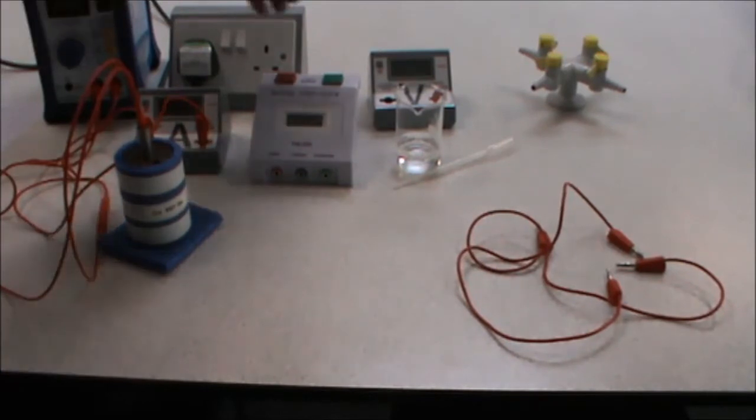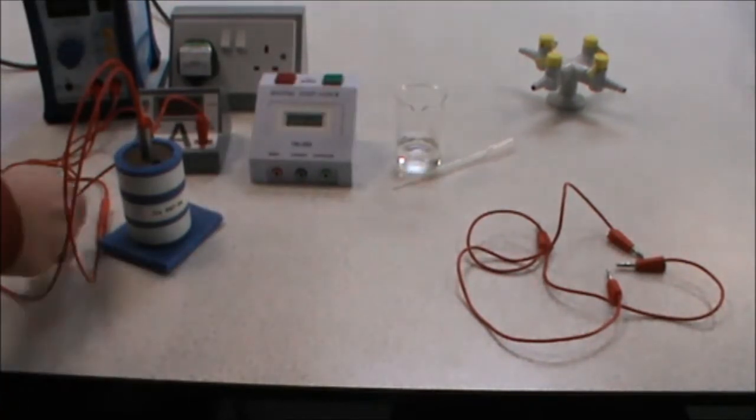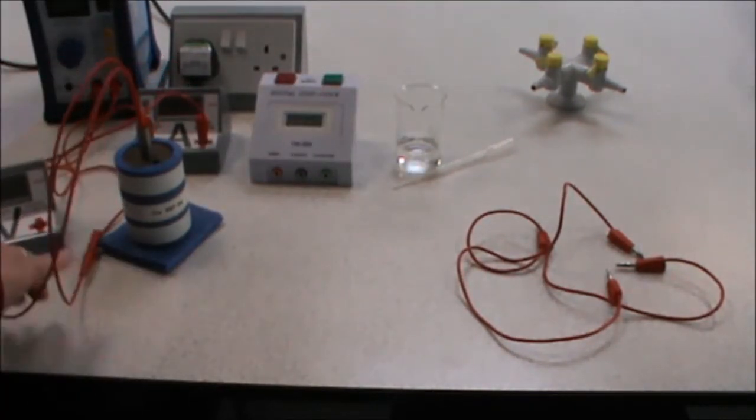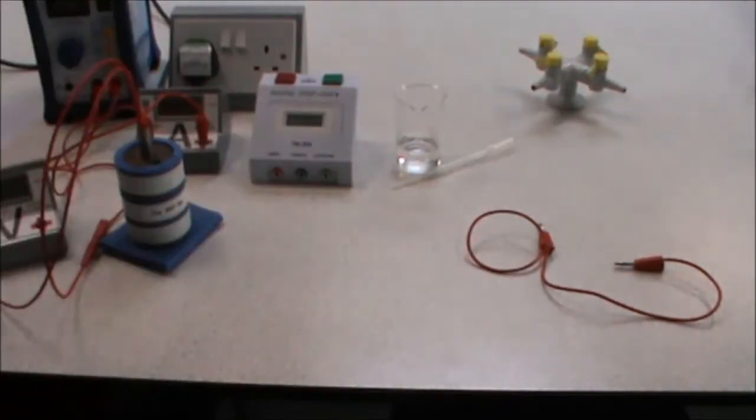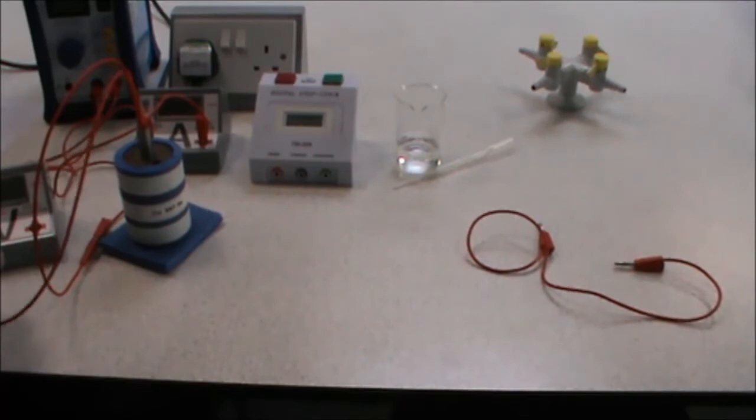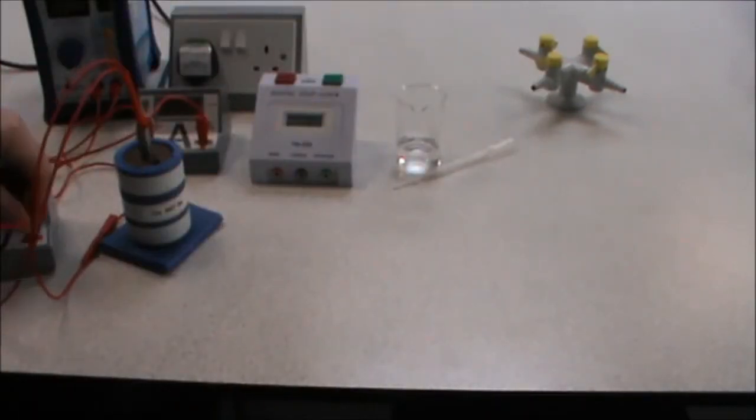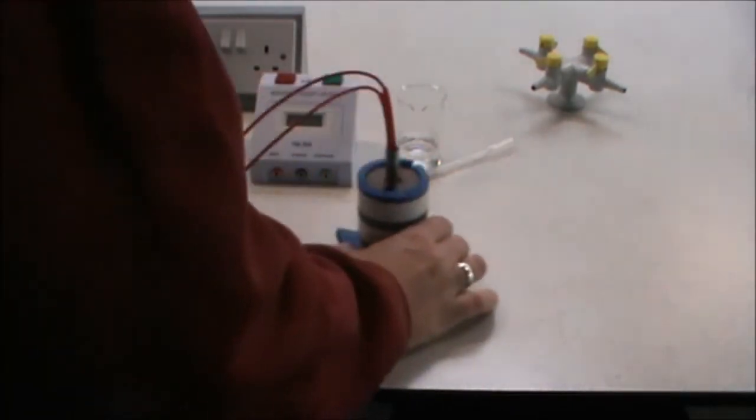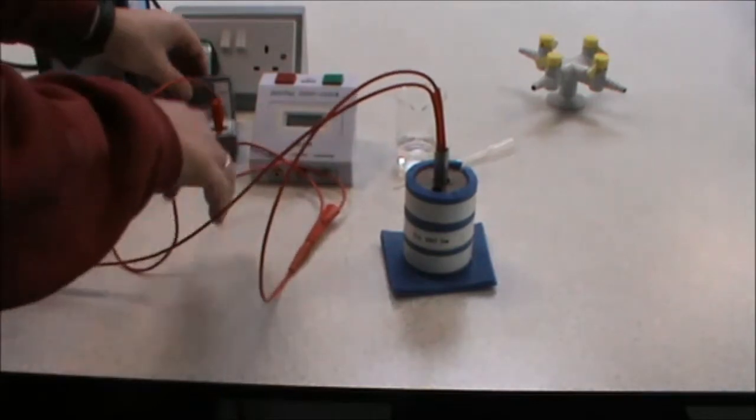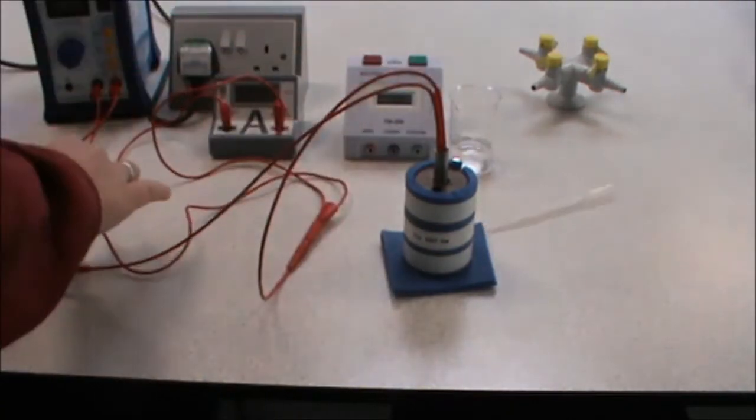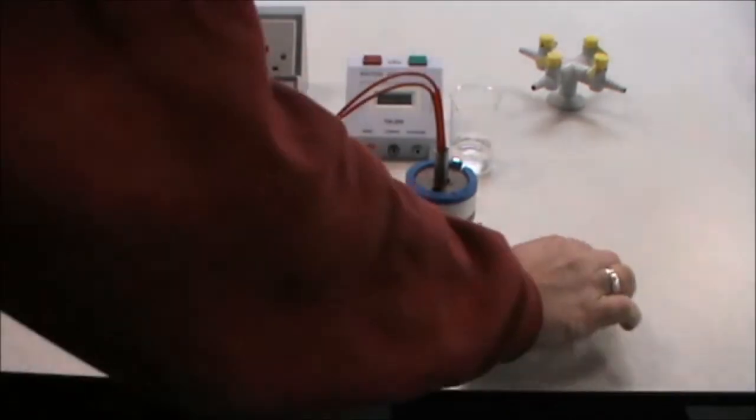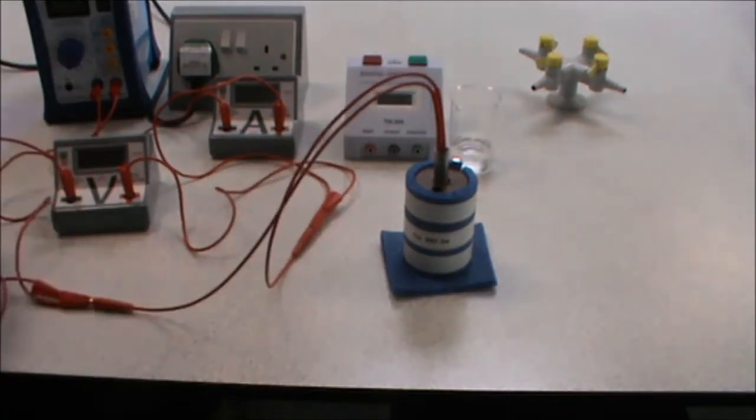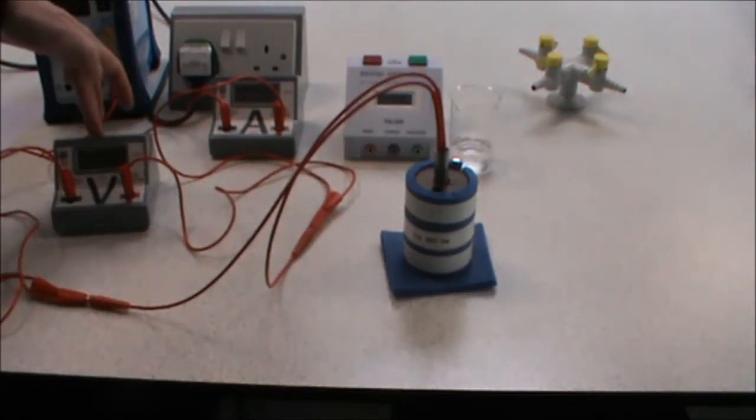We then have to connect the voltmeter across the heater. So that goes in parallel, plugging into the back of each plug. We now have our equipment set up so that we can power it and take our readings of voltage and current.